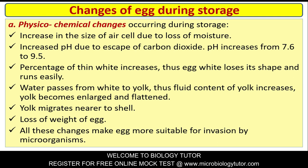Changes in egg during storage - Physical and chemical changes: Increase in the size of air cell due to loss of moisture; increased pH due to escape of carbon dioxide - pH increases from 7.6 to 9.5. Percentage of thin white increases, so egg white loses its shape and runs easily. Water passes from white to yolk, so the fluid content of yolk increases - yolk becomes enlarged and flattened. Yolk migrates nearer to the shell. Loss of weight of egg occurs. All these changes make the egg more suitable for invasion by microorganisms.